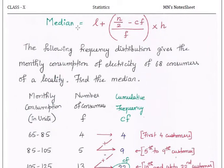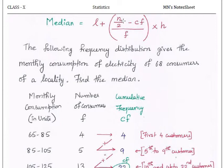The median formula is: L plus N by 2 minus Cf, divided by F, the whole multiplied by H. L is the lower limit of the median class, H is the height of the median class, F is the frequency of the median class, and N is the total number of data, which is nothing but sigma F.